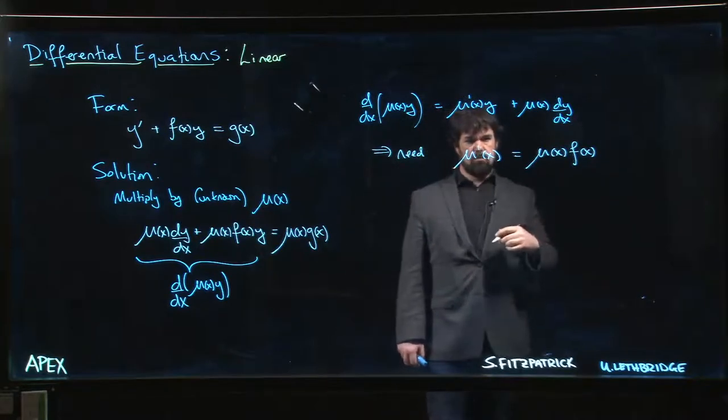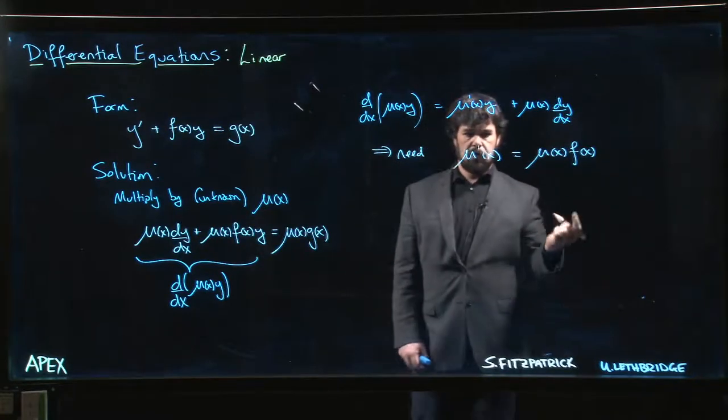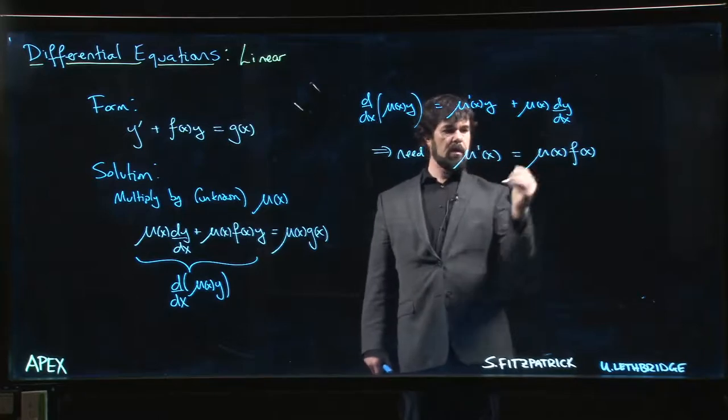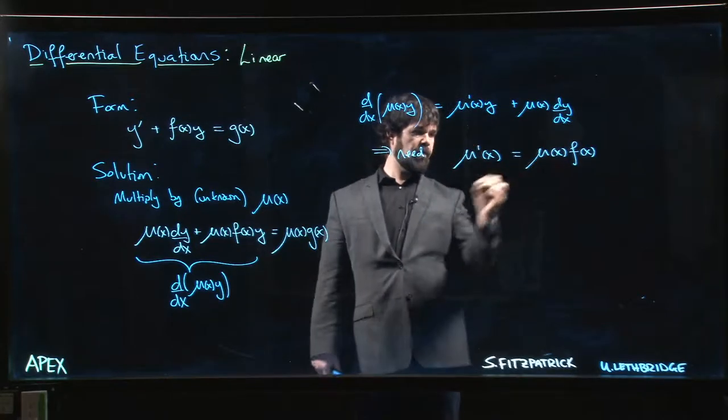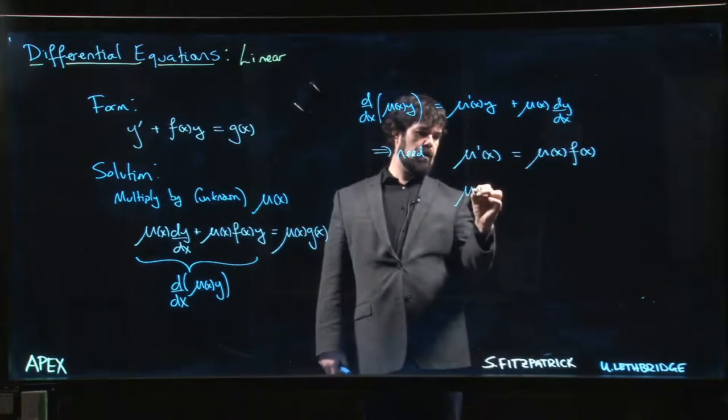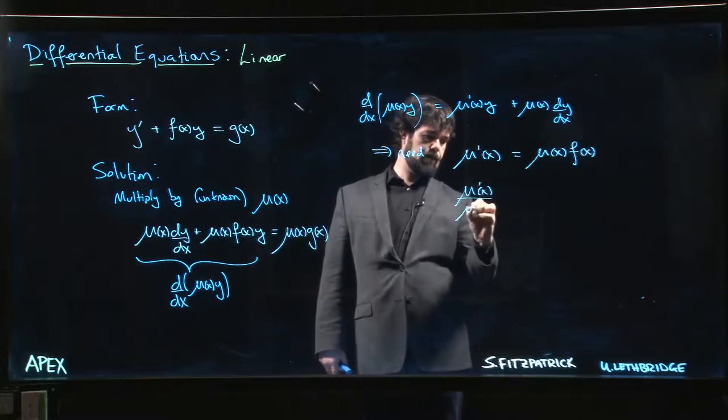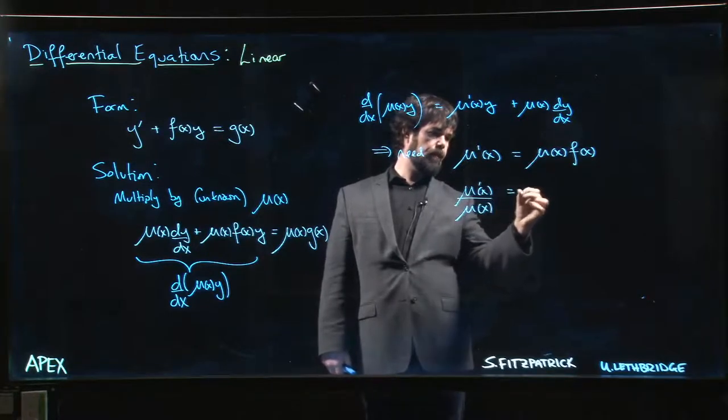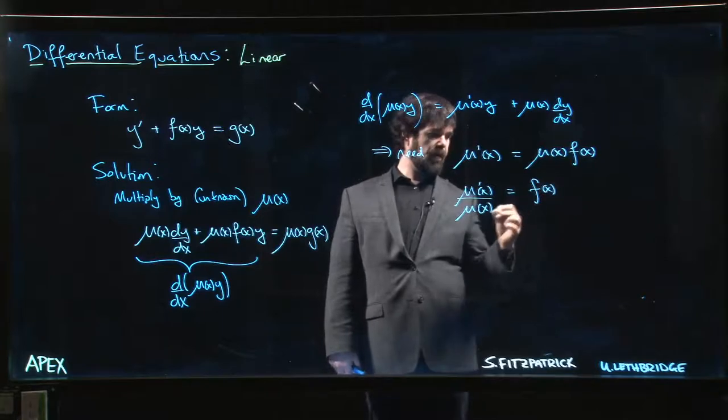And so now we want to try to solve for this mu prime. Well, what we can do is we divide both sides by mu of x. Mu prime of x over mu of x is equal to f of x.